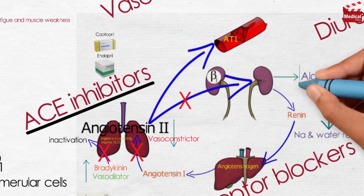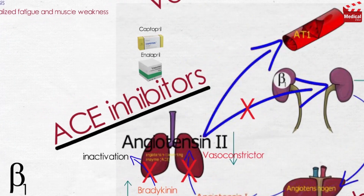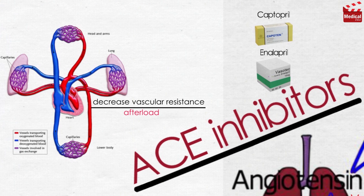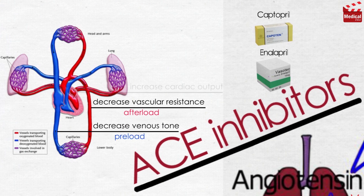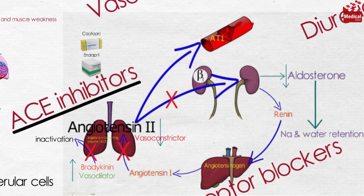Also, by reducing angiotensin-2 levels, ACE inhibitors also decrease the secretion of aldosterone. In heart failure, ACE inhibitors decrease vascular resistance, afterload, and venous tone, or preload, resulting in increased cardiac output. And by reducing angiotensin-2 levels, ACE inhibitors also decrease the secretion of aldosterone, so they decrease salt and water retention.